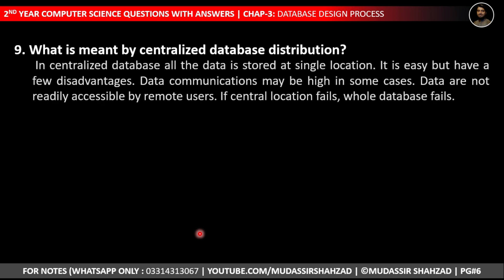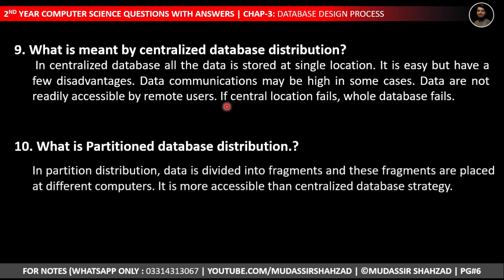The ninth question is: what is meant by centralized database distribution? In a centralized database, all the data is stored at a single location. It is easy to manage, but has a few disadvantages: data communication may be high in some cases, data is not readily accessible by remote users, and if the central location fails, the whole database fails.